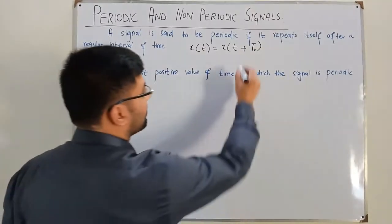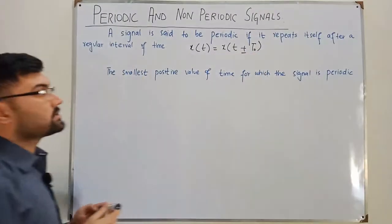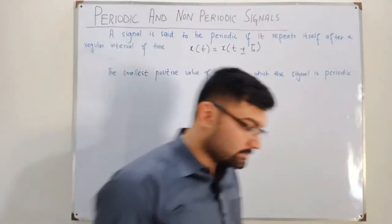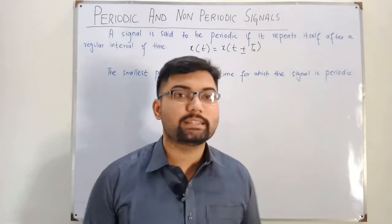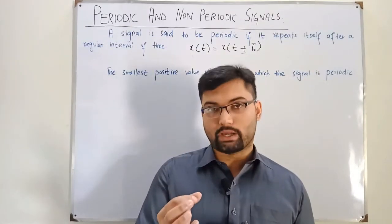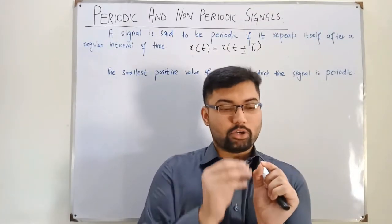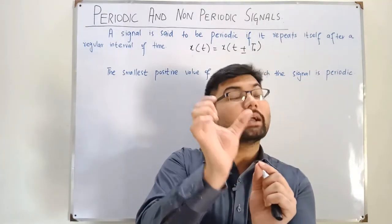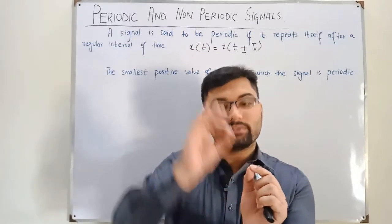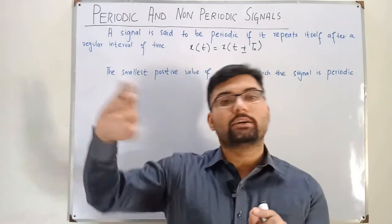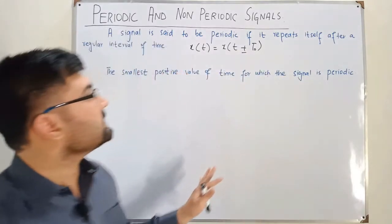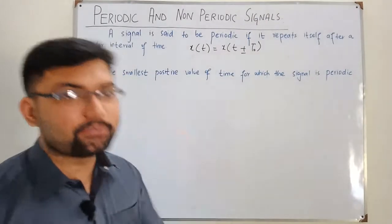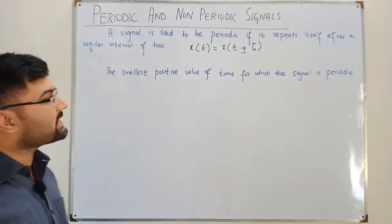It could also be x(t ± T₀) = x(t), meaning it has repeated. You take a particular value, go either left or right in time T₀, and you have the same value — the function repeats from there. This is a periodic signal. It is true not only for T₀ but also for 2T₀, 3T₀, 4T₀, 5T₀, and so on.